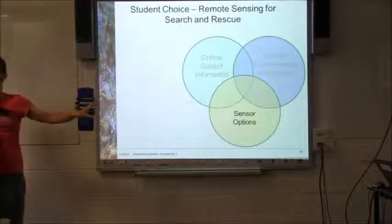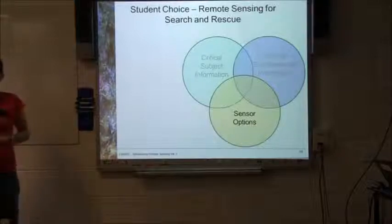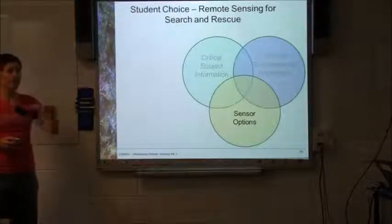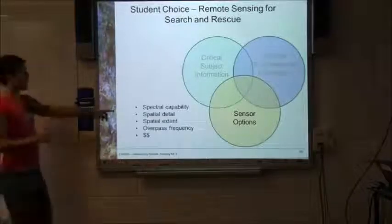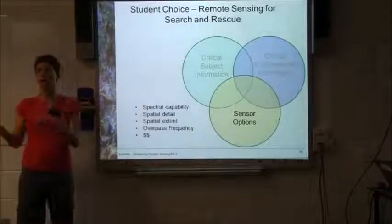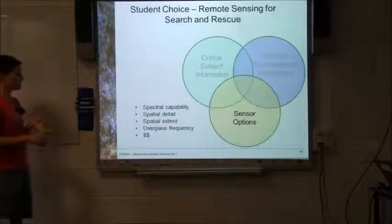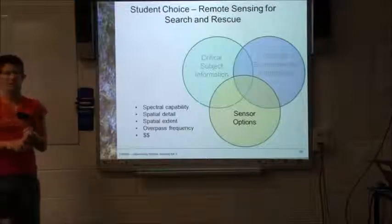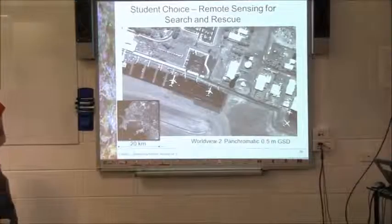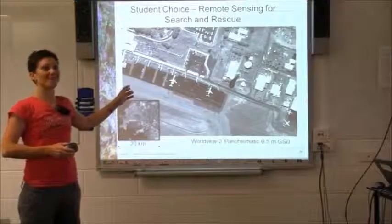Our sensor options involve: pixel size and spatial resolution — the spatial detail we can get; contrast levels; how frequently the satellite passes over; spectral capability, meaning the colours or wavelengths it measures; spatial extent; overpass frequency; and of course, how much it costs. Someone has to pay to acquire the data.